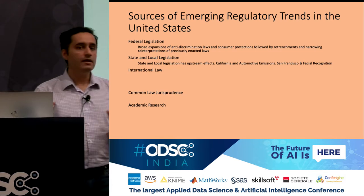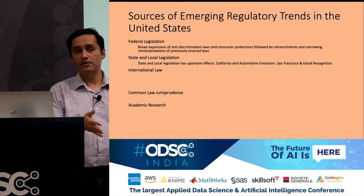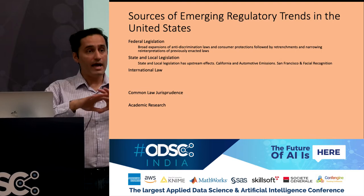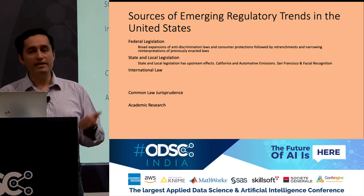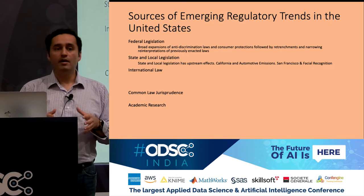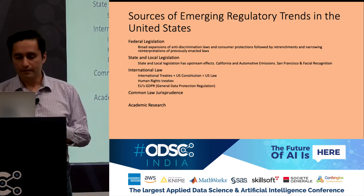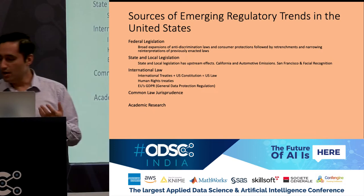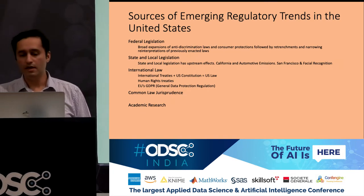State and local legislation is also highly relevant. For example, the current US government rolled back some automotive emission requirements, but California said it would keep to a certain set of emissions, and all automakers agreed at the national level. San Francisco recently made local legislation banning facial recognition for certain kinds of police activity, which will constrain how such technology can be used beyond San Francisco itself. International law is also relevant because international treaties, together with national constitutions, essentially imply they have the force of local laws in those geographies.